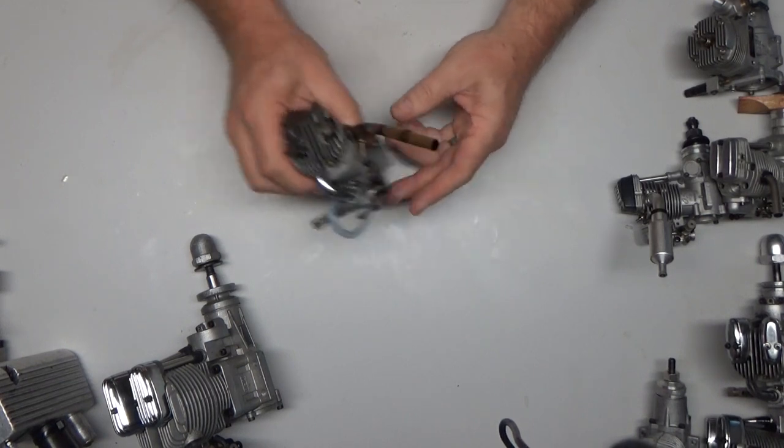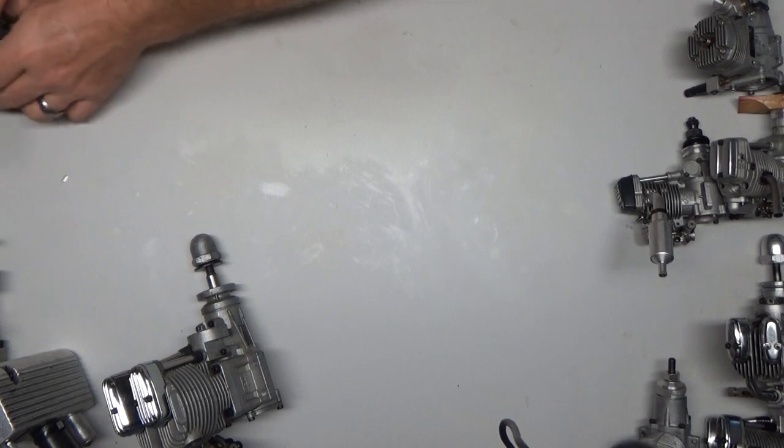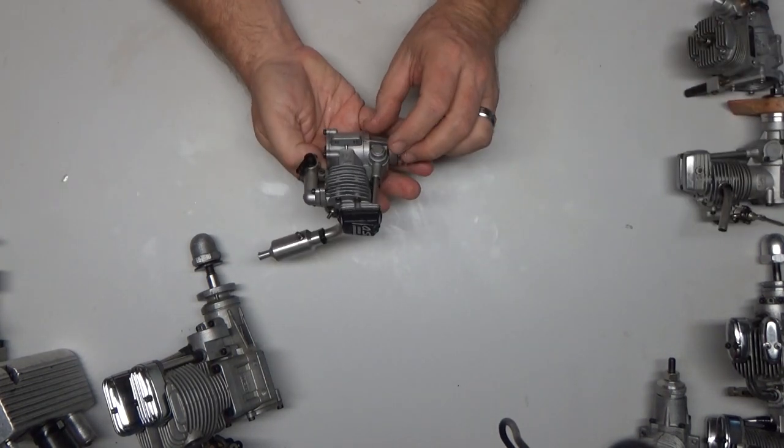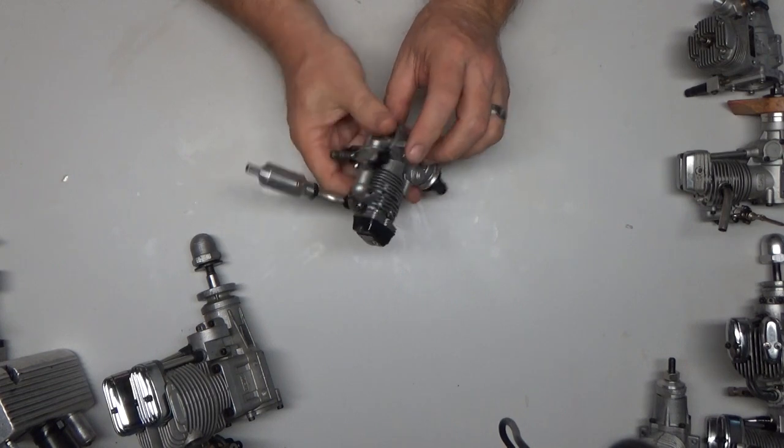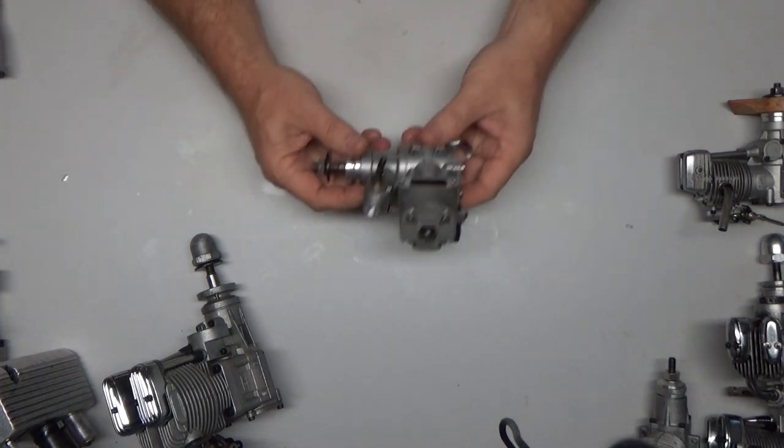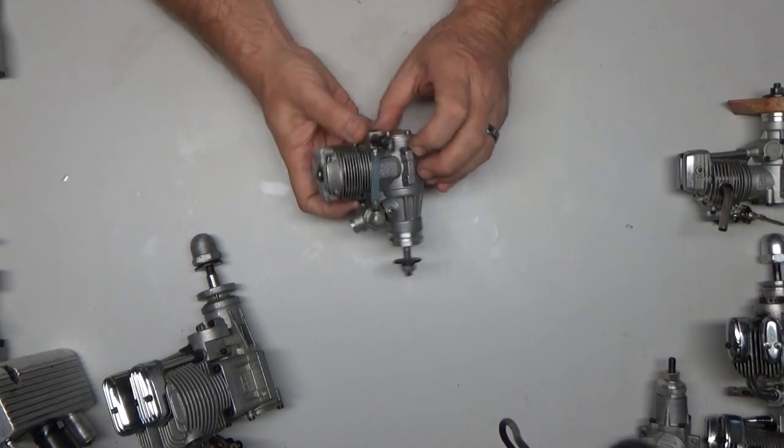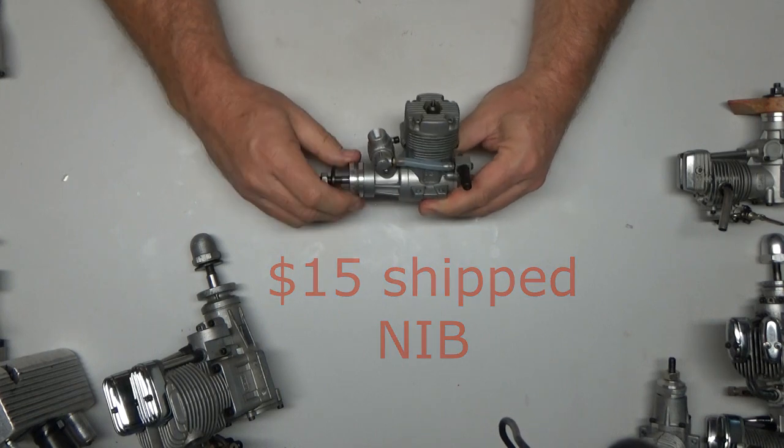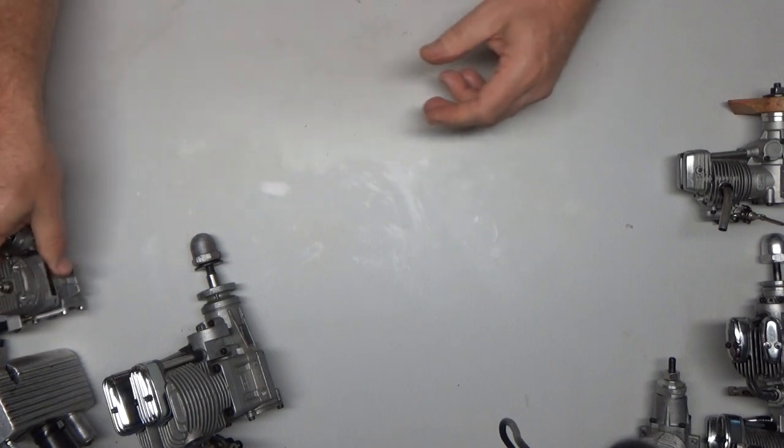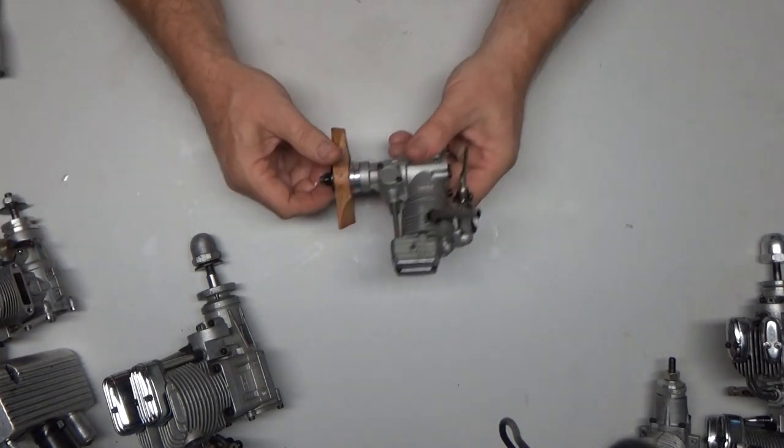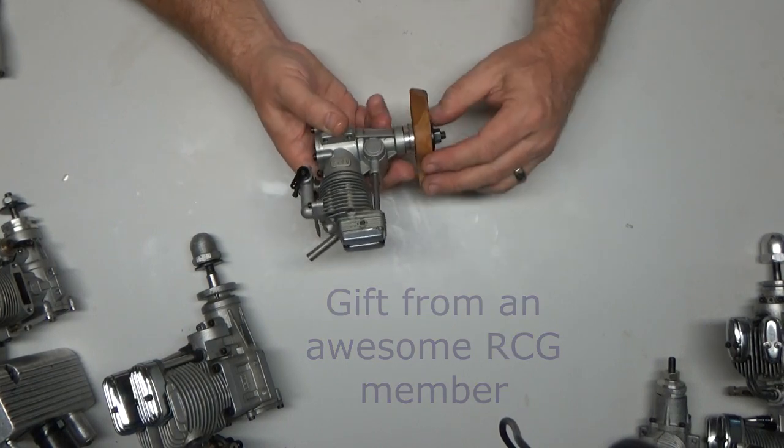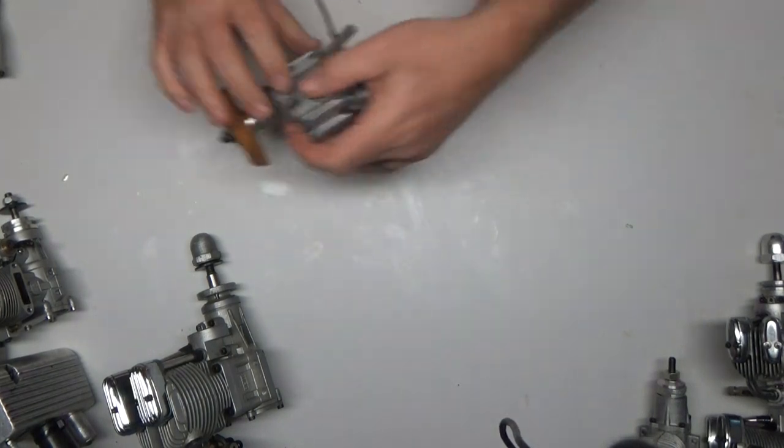That OS 30 Surpass, again everything I'm showing is under $100. Here's the vaunted Enya 46 two-stroke engine - those subscribers that I've had for a couple years will recognize this engine and all the videos I made with that. Here's an OS 40 FS, the original, another very nice classic engine.